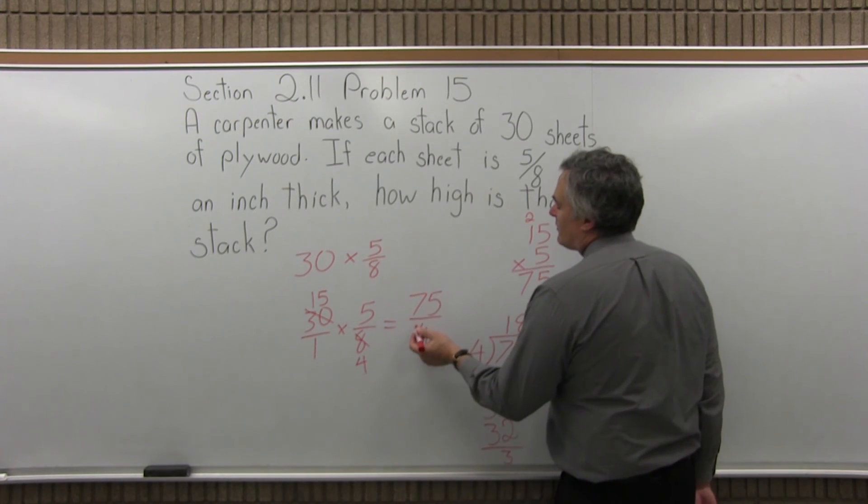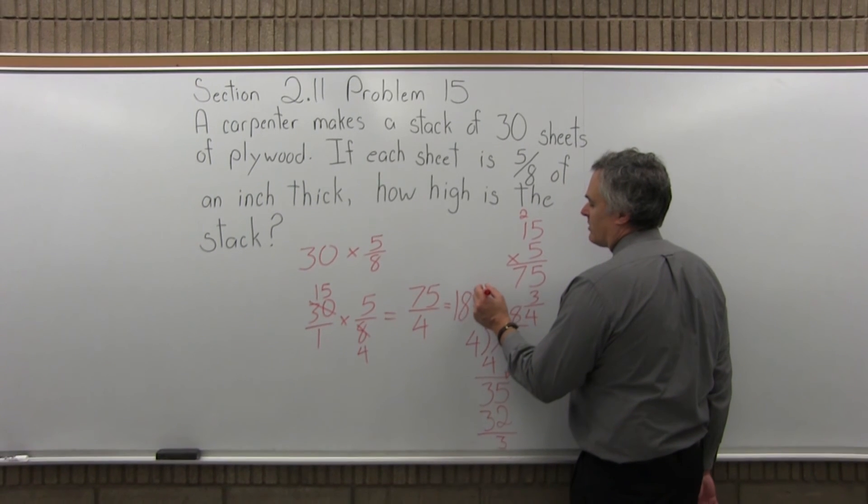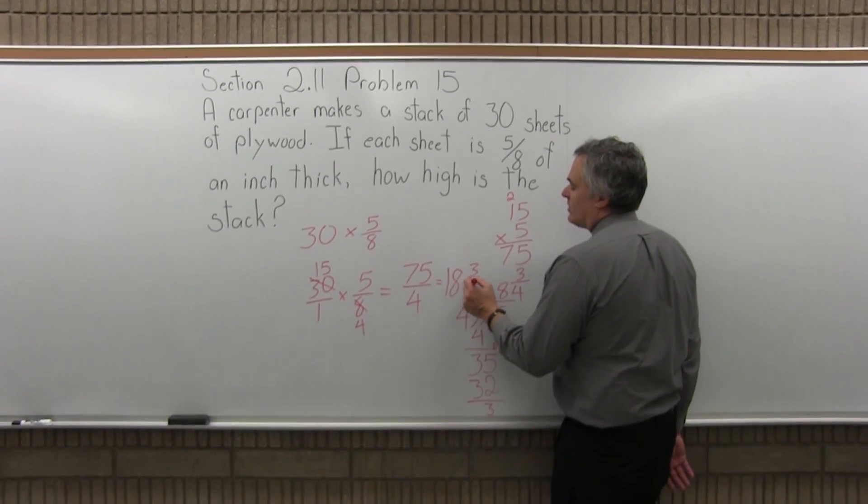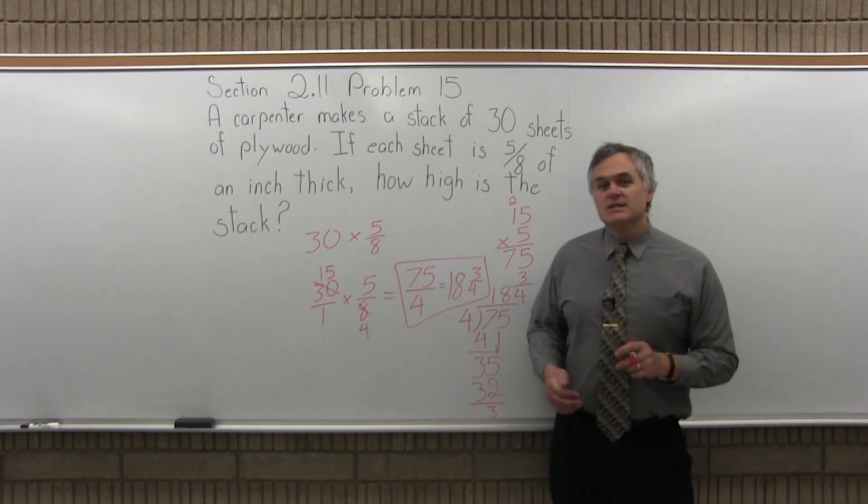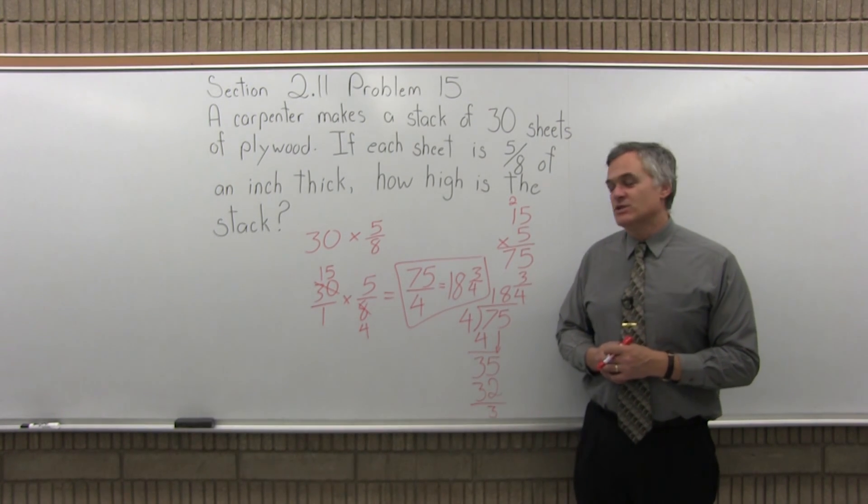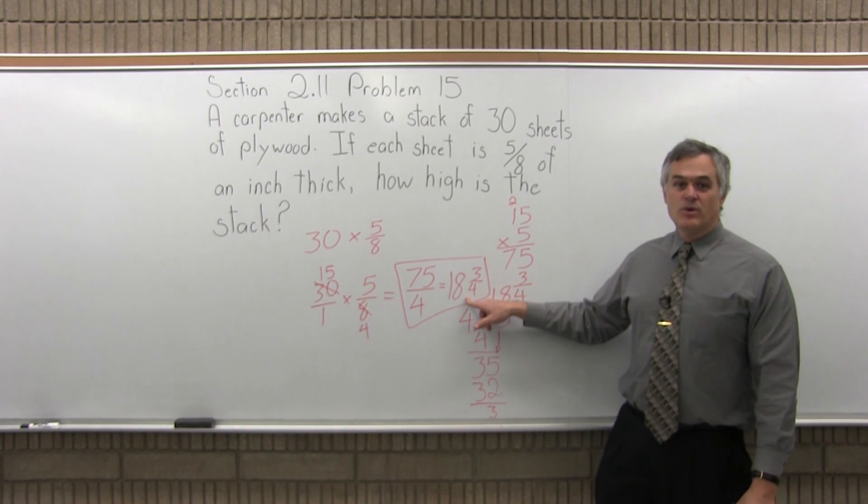So 75 over 4 is the correct answer, but it's really not in the nicest form, it's also equivalent to 18 and 3 quarters, so if you have a stack of plywood, there's 30 sheets in the stack, each stack is 5 eighths of an inch thick, the height of that pile of plywood is 18 and 3 quarter inches.